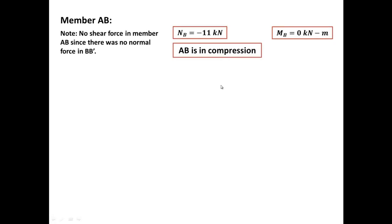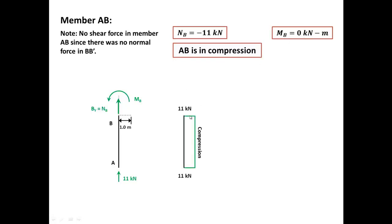Member AB should be the last member we analyze. We have a normal force NB which was negative 11, but we said it should be in the other direction, so AB is going to be in compression. We have a moment equal to zero. So it's in compression with no shear and no moment.